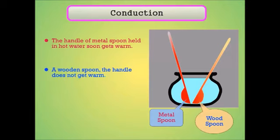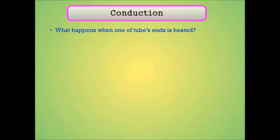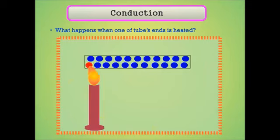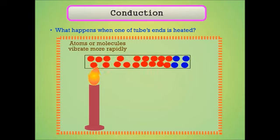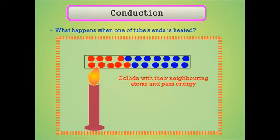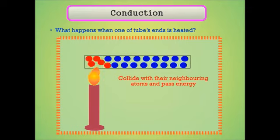Conduction: metal spoon ke handle garam pani mein jaldi garam ho jate hain, lekin wooden spoon ke handle garam nahi hote. What happens when one end of tube is heated? Solid mein atoms or molecules ikhathe hote hain. At that end, molecules rapidly vibrate karna shuru kar dete hain. Yeh apne neighbor atoms or molecules se collide karte hue apni kuch energy dusre atoms ko transfer kar dete hain.